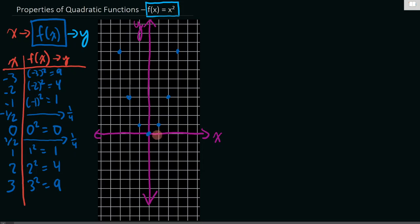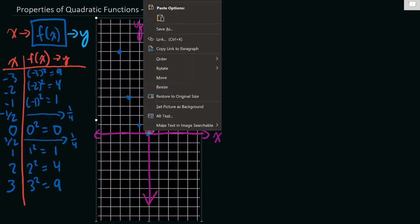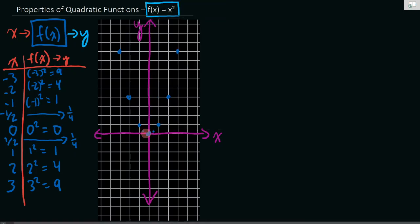So that gives us a point half a box over, a quarter box up, and half a box over, a quarter box up. And if we connect all of these points, we can see our basic quadratic function.